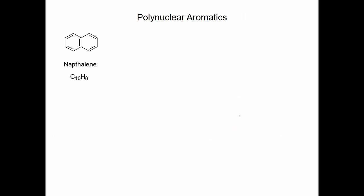We can have multiple benzene rings fused together, and these are called polynuclear aromatics. This is naphthalene. This is C10H8. Recall that benzene was C6H6.